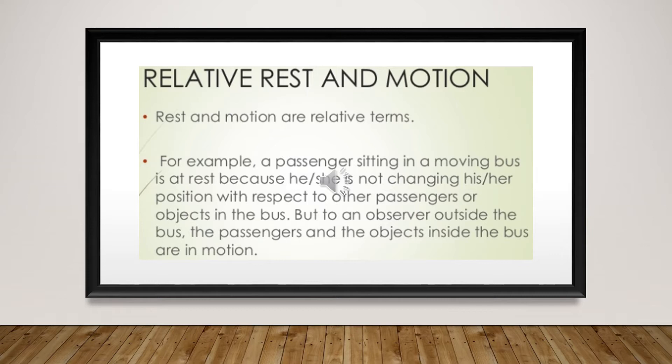Another example: a passenger sitting in a moving bus is at rest because he is not changing his position with respect to the other passengers or objects in the bus, but to an observer outside the bus, the passenger and the objects inside are in motion. From these observations we can conclude that the state of motion and state of rest are simply related to one another.